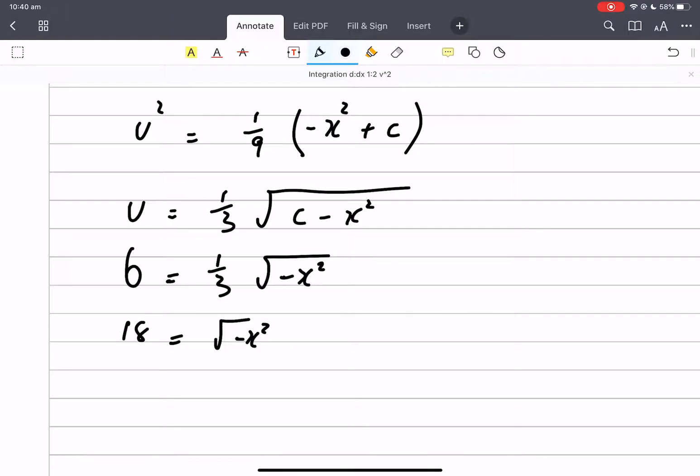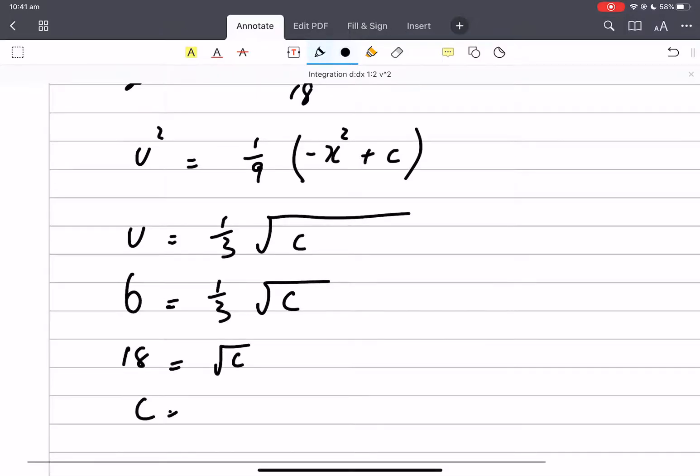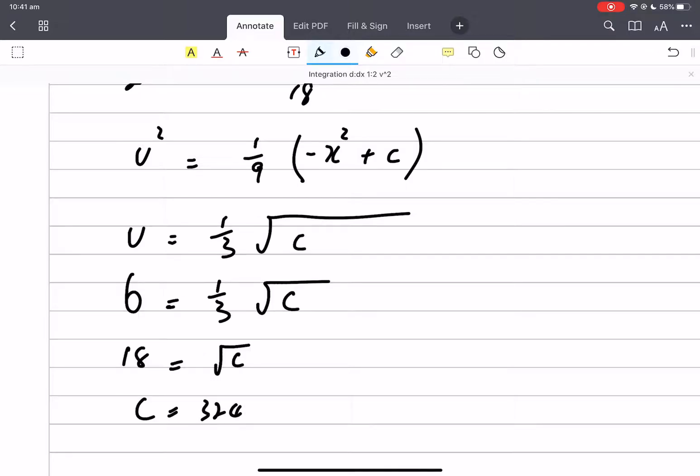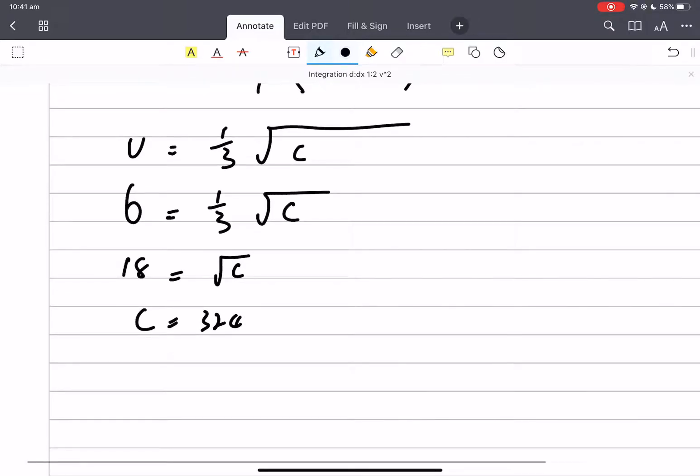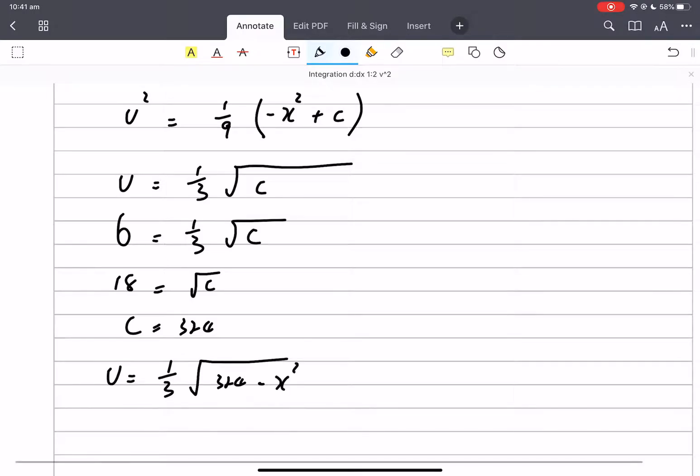So 18 equals the square root of c, so c is 324. So we get this rule: v equals one third times the square root of 324 minus x squared.